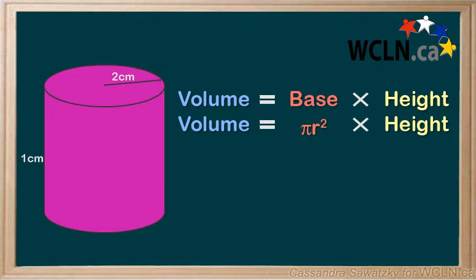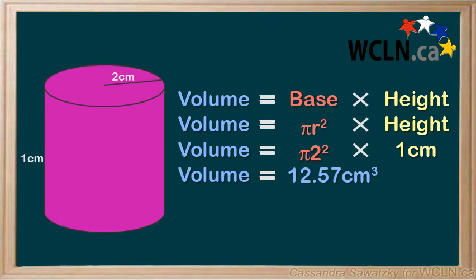Looking at our shape, we can see that the radius is 2. We can put in our values and total it. Our volume is about 12.6 centimeters cubed.